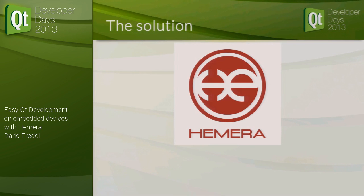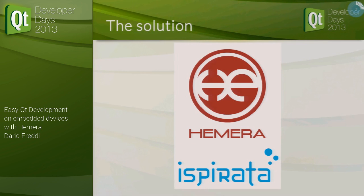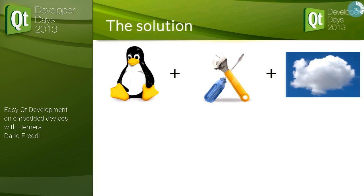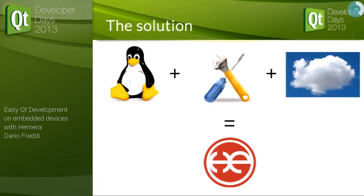So what is the solution? My company, Ispilata, has been working on this for the last months, and it's called Himera. Himera is, first of all, a Greek god — we like mythology and name things after gods. Most of all, it's an operating system based on Linux, an SDK plus tooling for creating applications and managing your session, and a remote cloud web solution for managing your device.